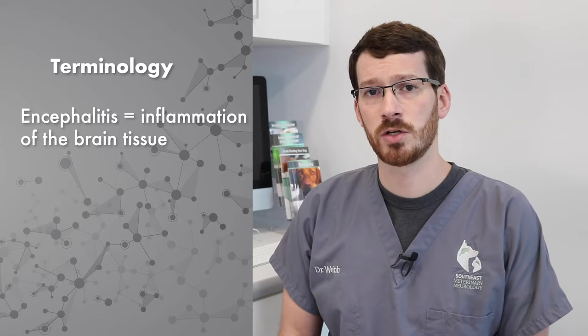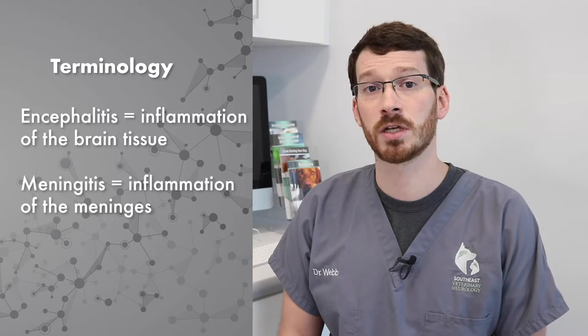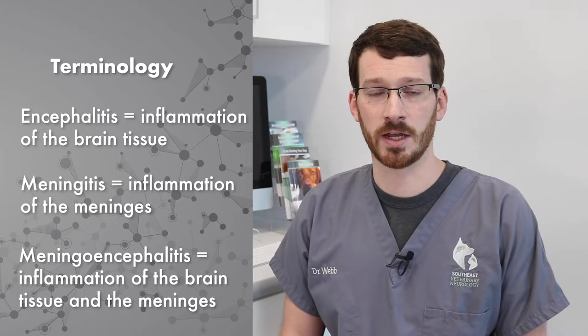The terminology around encephalitis can be a bit confusing. You have encephalitis, which means inflammation of the brain tissue. You have meningitis, which is inflammation of the meninges — the covering of the brain itself. And then you have more complicated terms like meningoencephalitis, which is inflammation of both the meninges and the brain tissue itself.